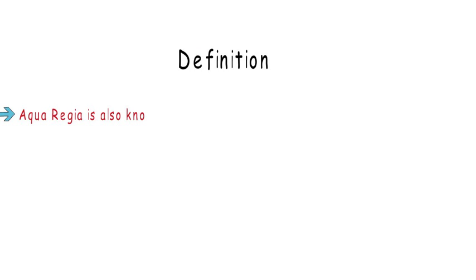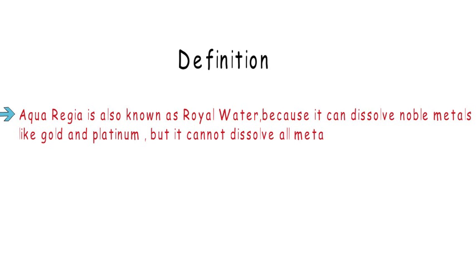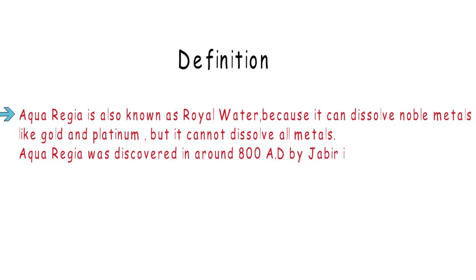Aqua regia is also known as royal water, because it can dissolve noble metals like gold and platinum, but it cannot dissolve all metals. Aqua regia was discovered in around 800 AD by Jabir Ibni Haiyan.